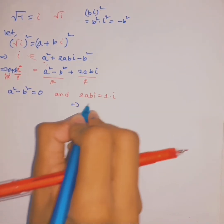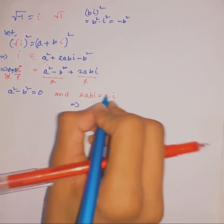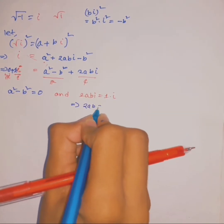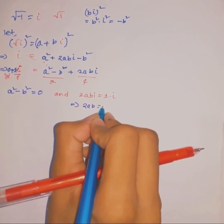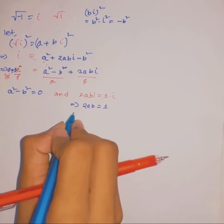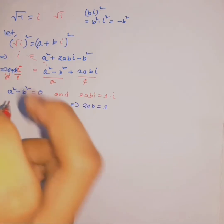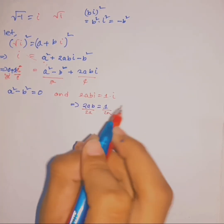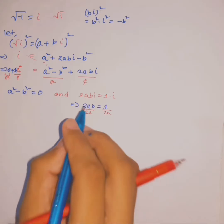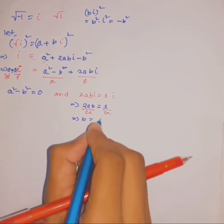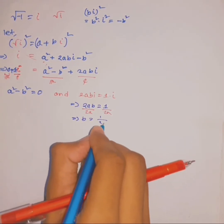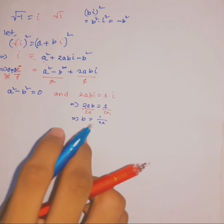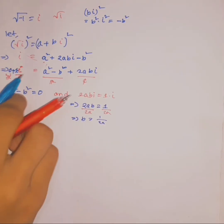From 2ab equals 1, divide both sides by i to get 2ab equals 1, then divide both sides by 2a, so b equals 1 over 2a.